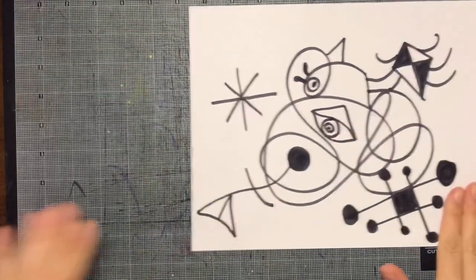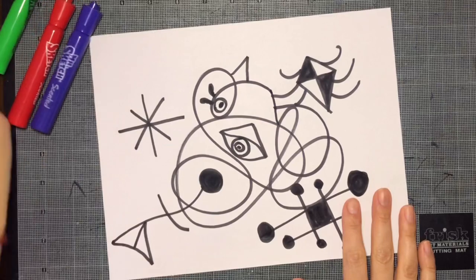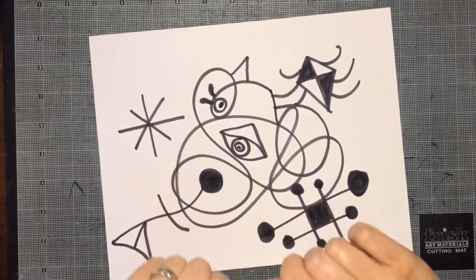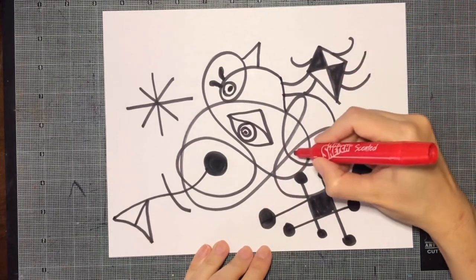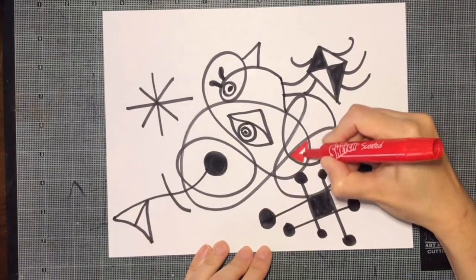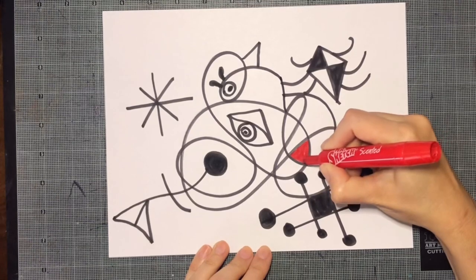I think I'm done. So now I'm going to take my color markers and I'm going to choose a few spaces to color. I'm going to start with this red space over here. Each space is going to have a color.